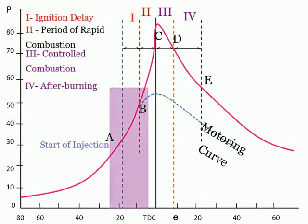The period between the start of fuel injection into the combustion chamber and the start of combustion is termed as the ignition delay period. The start of injection can be determined by a needle lift indicator to record the time when the injector needle lifts off its seat.